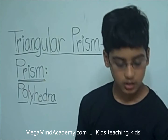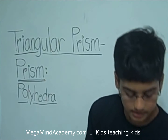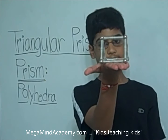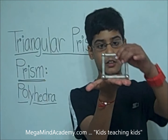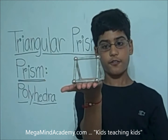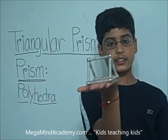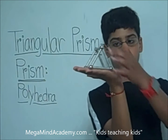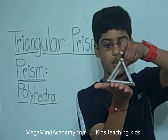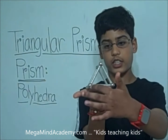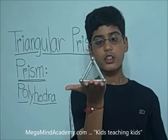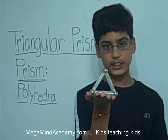A triangular prism looks like this. It has six vertices. One, two, three on this end, and one, two, three on this end. So that makes it have six vertices.